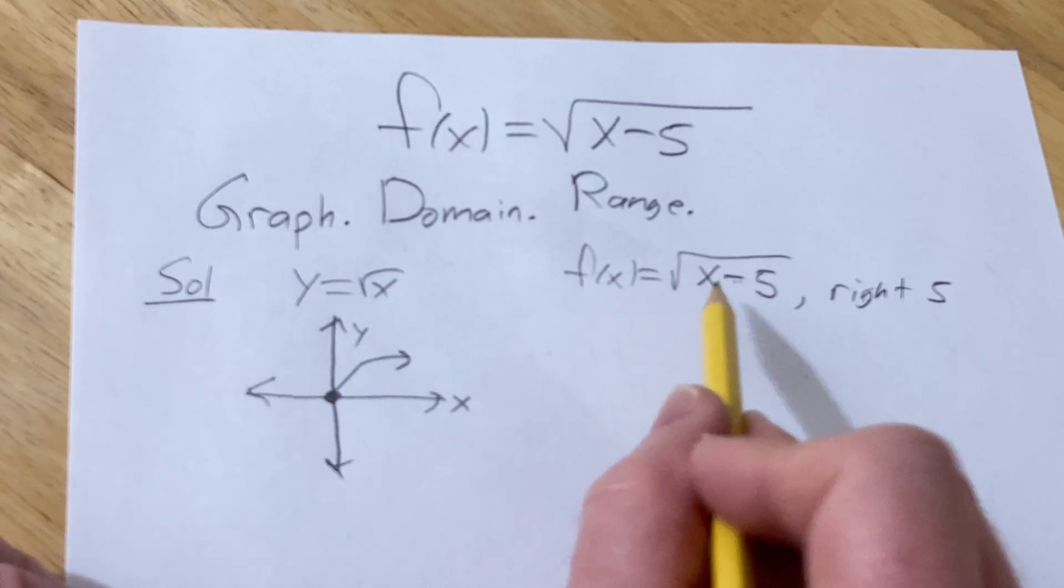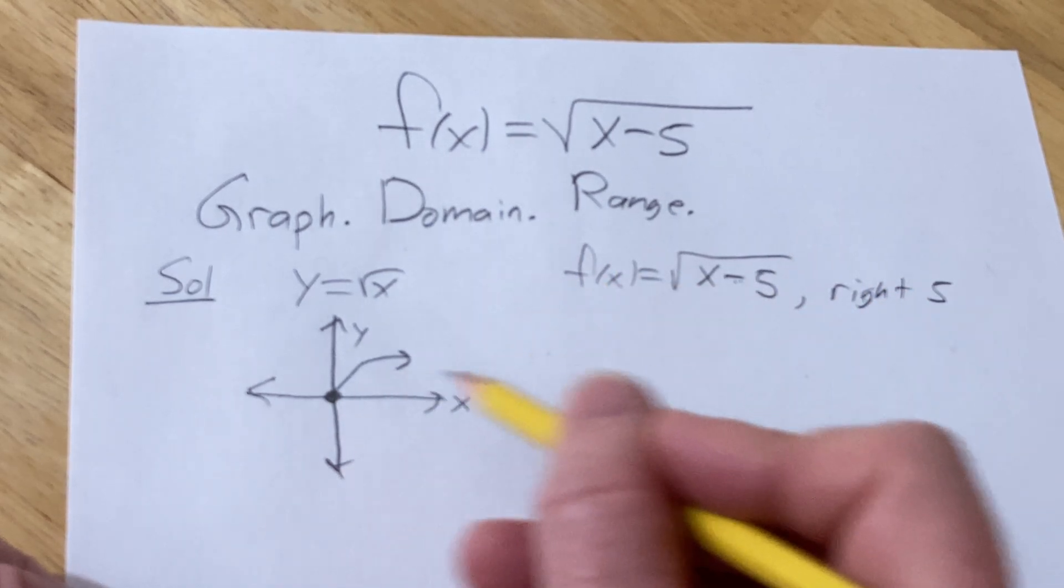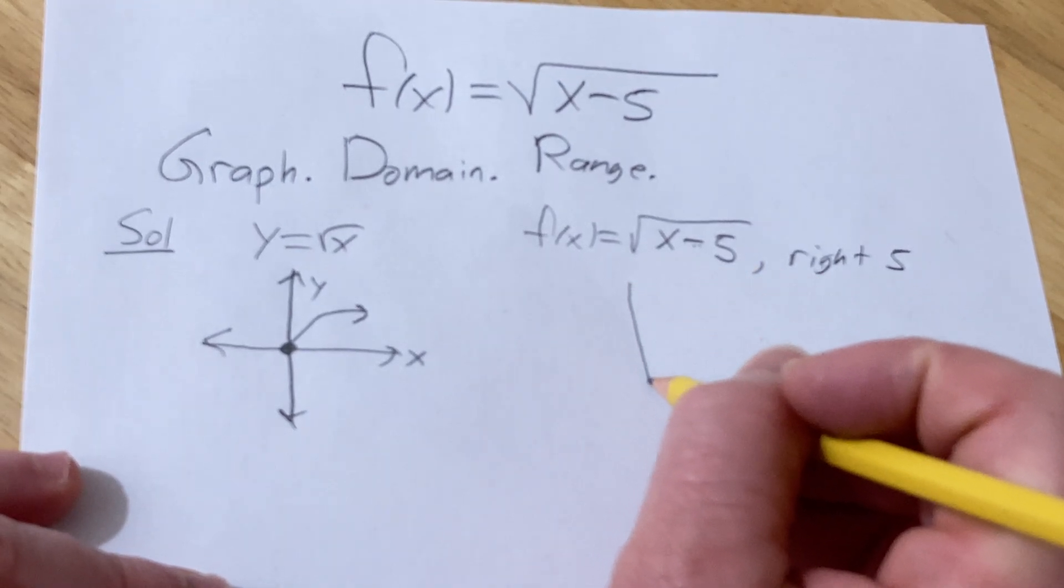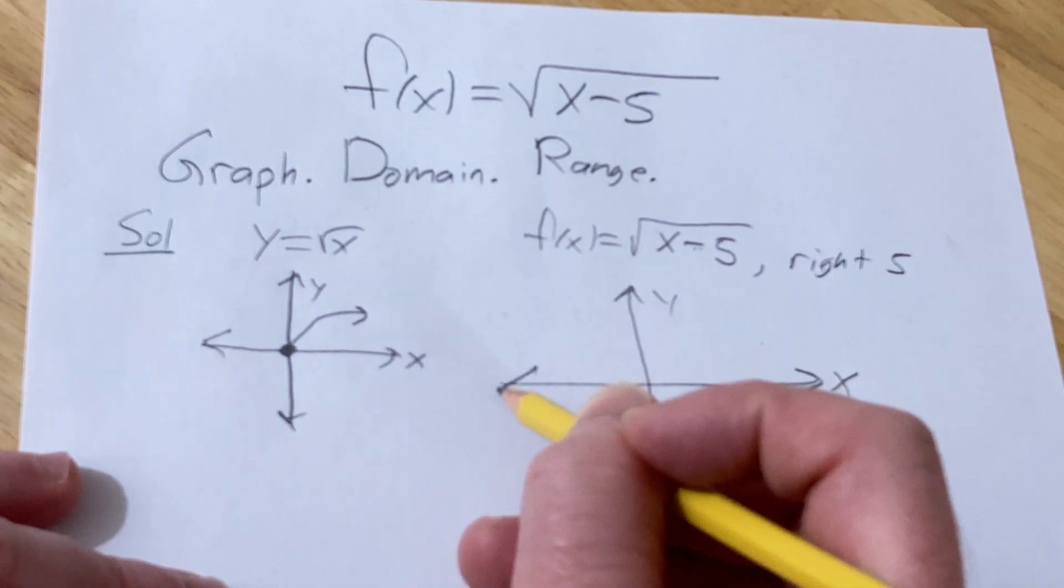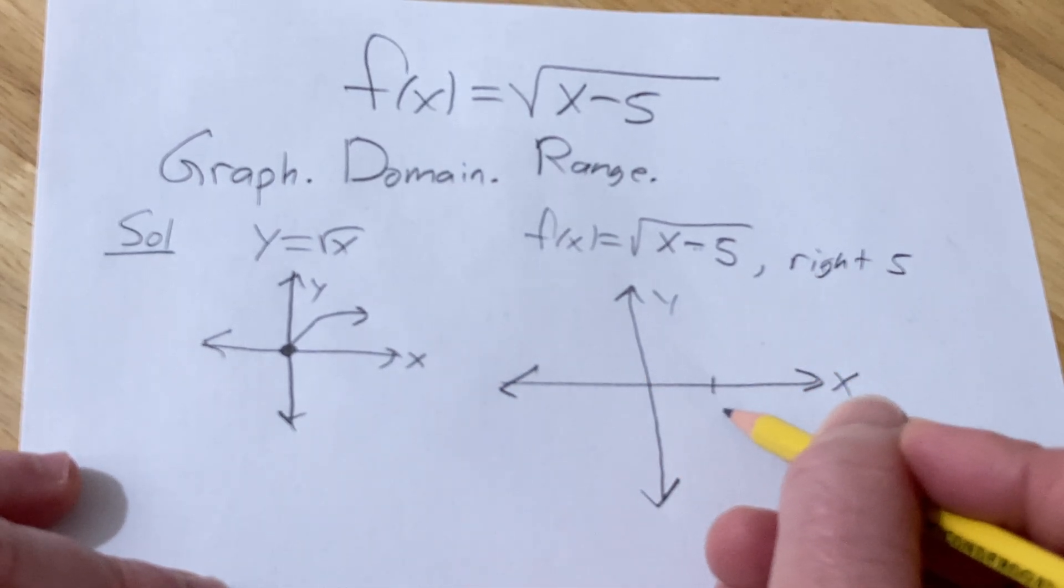So basically, we're going to take this entire graph and shift it to the right. So here's the y-axis. Here's the x-axis. And so we're going to go right 5. So this is 5, let's say.